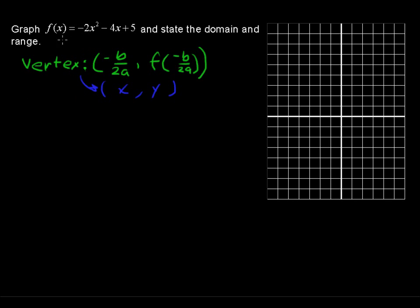Of this function, a is the coefficient on x², the leading coefficient, which is -2. b is -4, the coefficient on x. c equals 5, and we're not going to be using 5 in this formula, but I'm in the habit of finding a, b, and c.